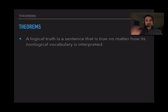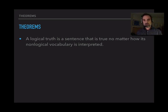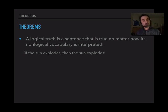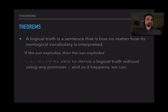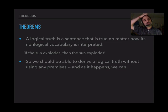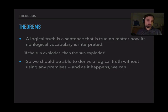A logical truth is a sentence that is true no matter how its non-logical vocabulary is interpreted. A simple one might be: if the sun explodes, then the sun explodes. This is true no matter what — whether or not the sun is actually exploding, if the sun explodes, then it explodes. That's true. And because it's true in every situation, no matter what, we should be able to derive it without using any premises, and we can.